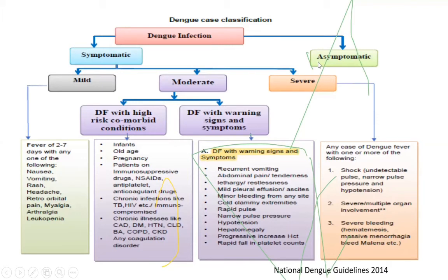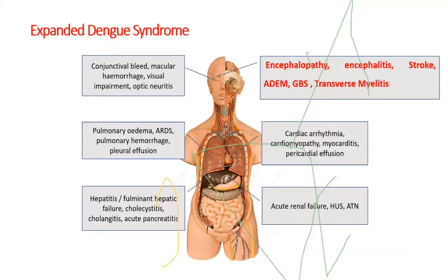Under the new classification, dengue infection can be asymptomatic or symptomatic. Symptomatic may be mild fever with constitutional symptoms; moderate dengue with high-risk comorbid conditions as seen in infants, old age, pregnancy, or immunocompromised patients; or dengue fever with warning signs such as recurrent vomiting, abdominal pain, pleural effusion, narrow pulse pressure, hypotension, rapid fall in platelets, or rapid increase in hematocrit.